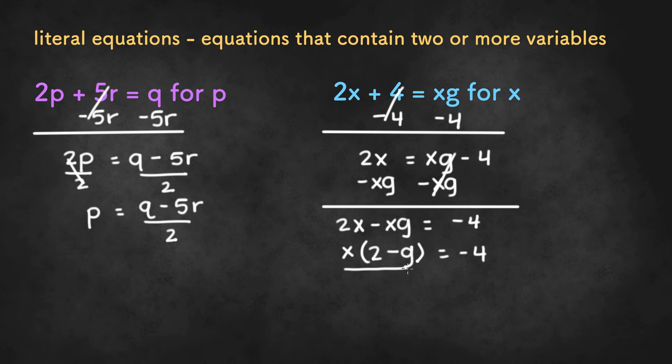So, now it will be easy to divide minus G from both sides to isolate X. And once we do that, we have X equals negative 4 divided by 2 minus G.